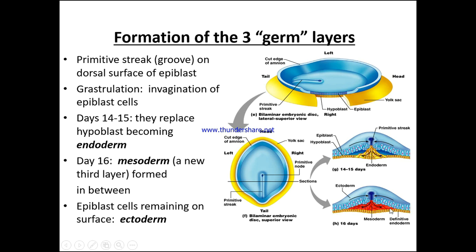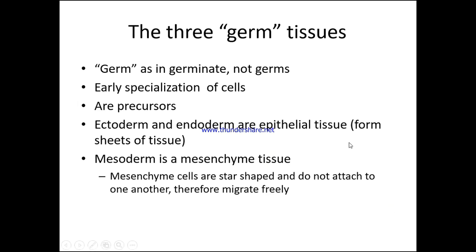The three germ tissues — 'germ' as in germinate, not germs you catch — represent early specialization of cells; they are precursors. The ectoderm and endoderm are epithelial tissues that form sheets of tissue. The mesoderm is mesenchymal tissue — mesenchymal cells are star-shaped and do not attach to one another, and due to this they can migrate freely.